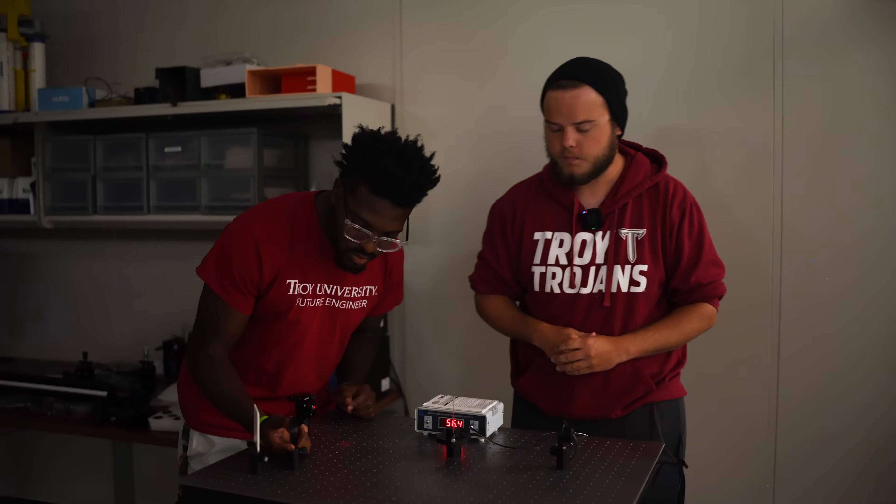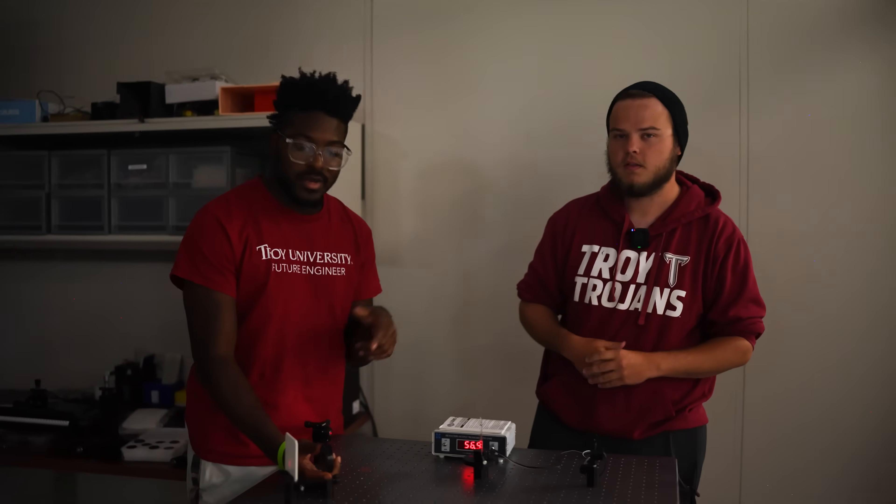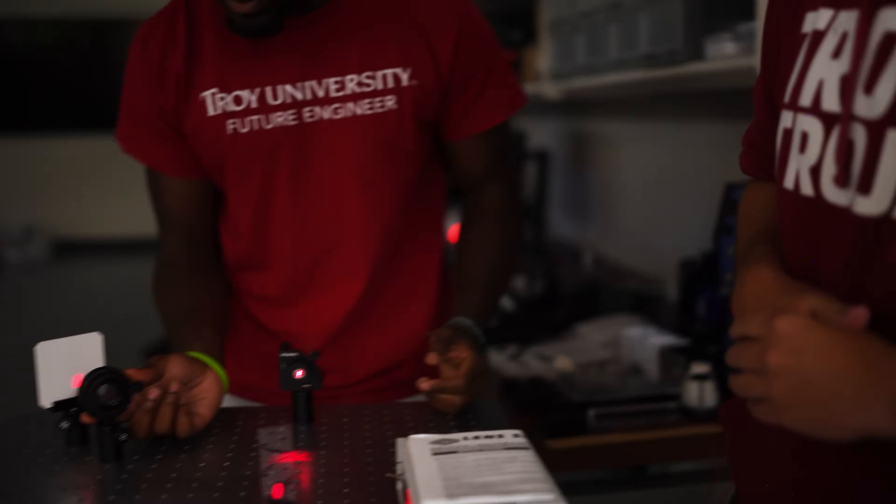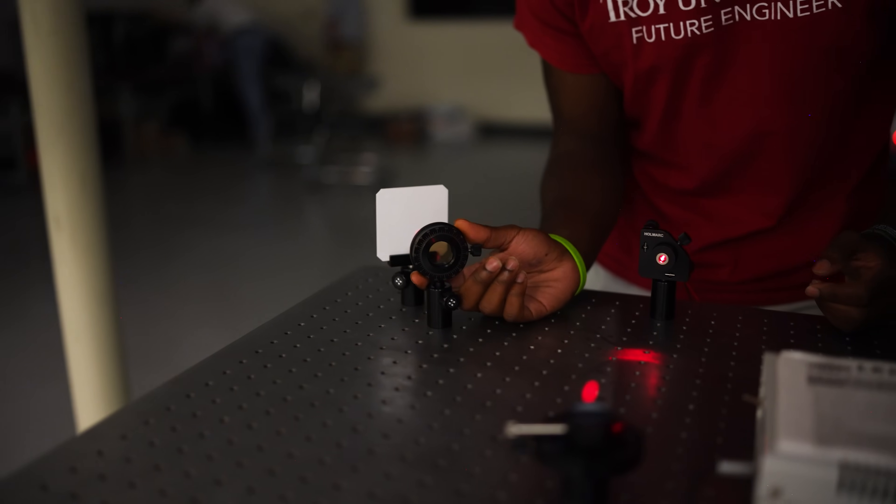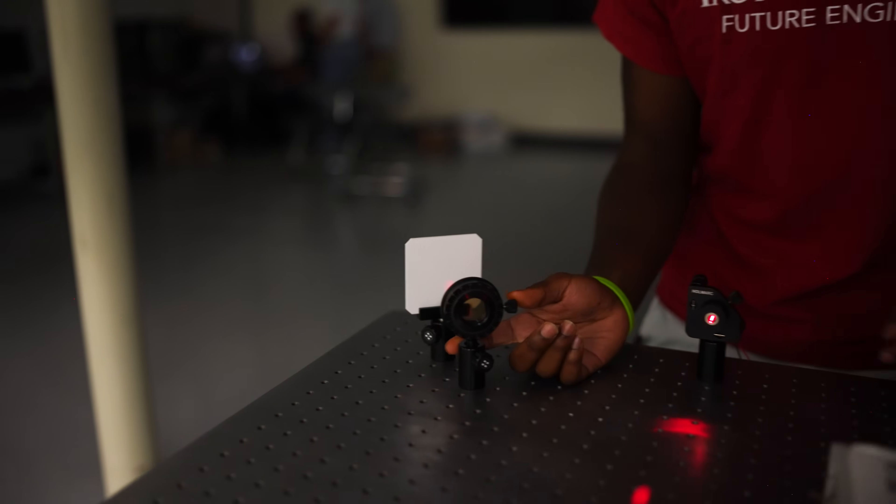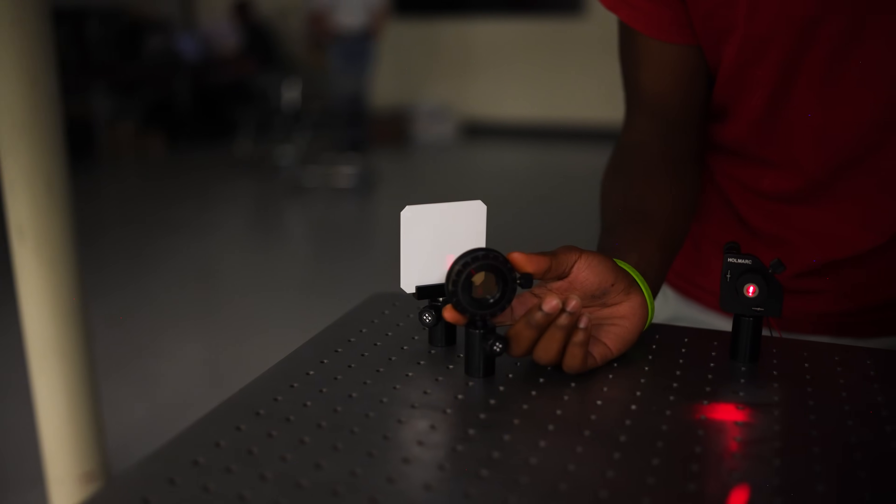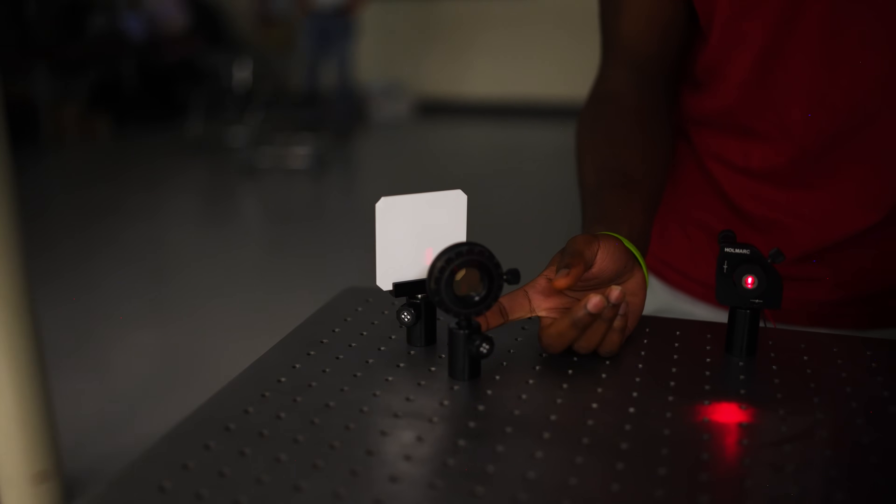Once it's fully polarized, what you can do is change the angle of the slit that it's going through. That changes the intensity of the light coming through, as you can see on that panel.